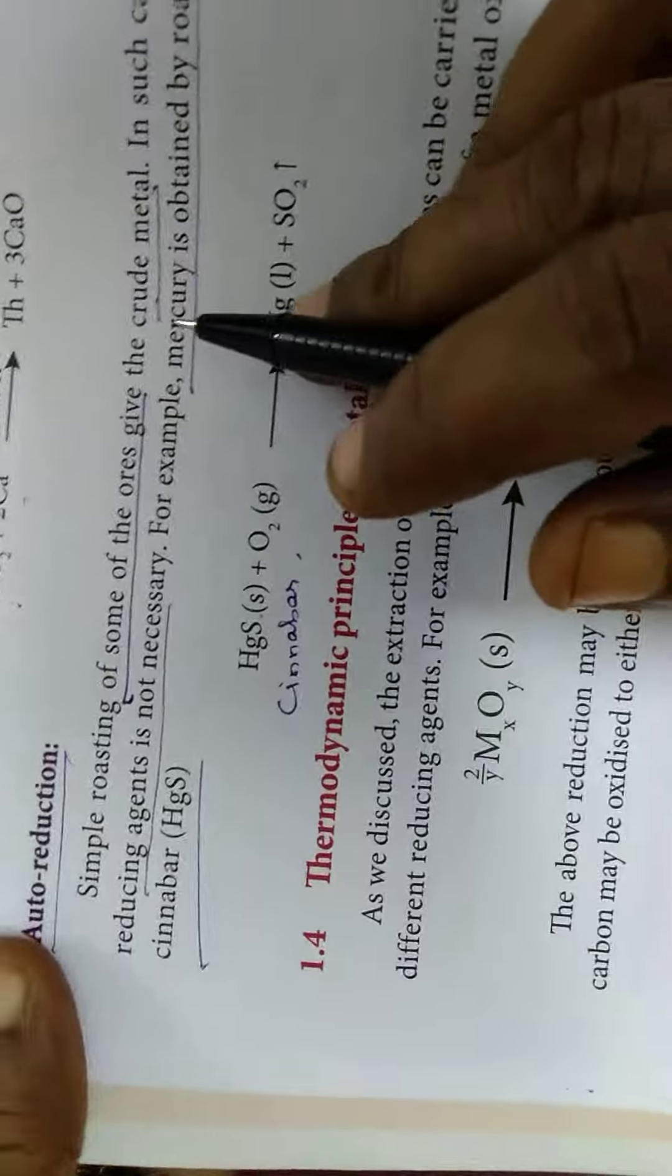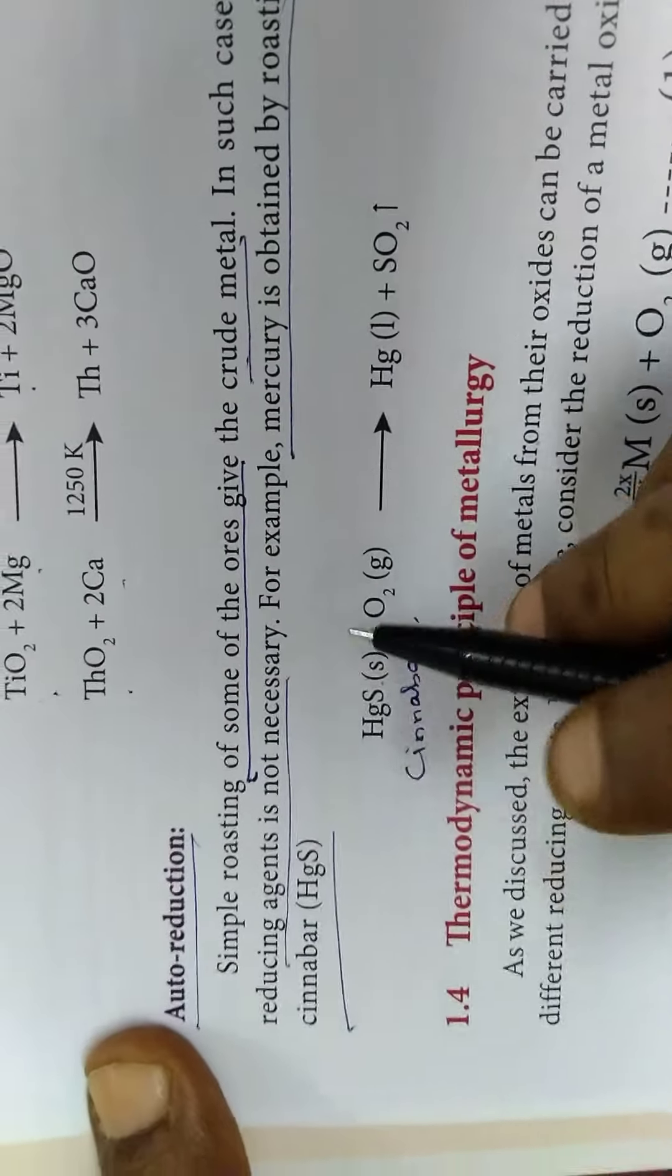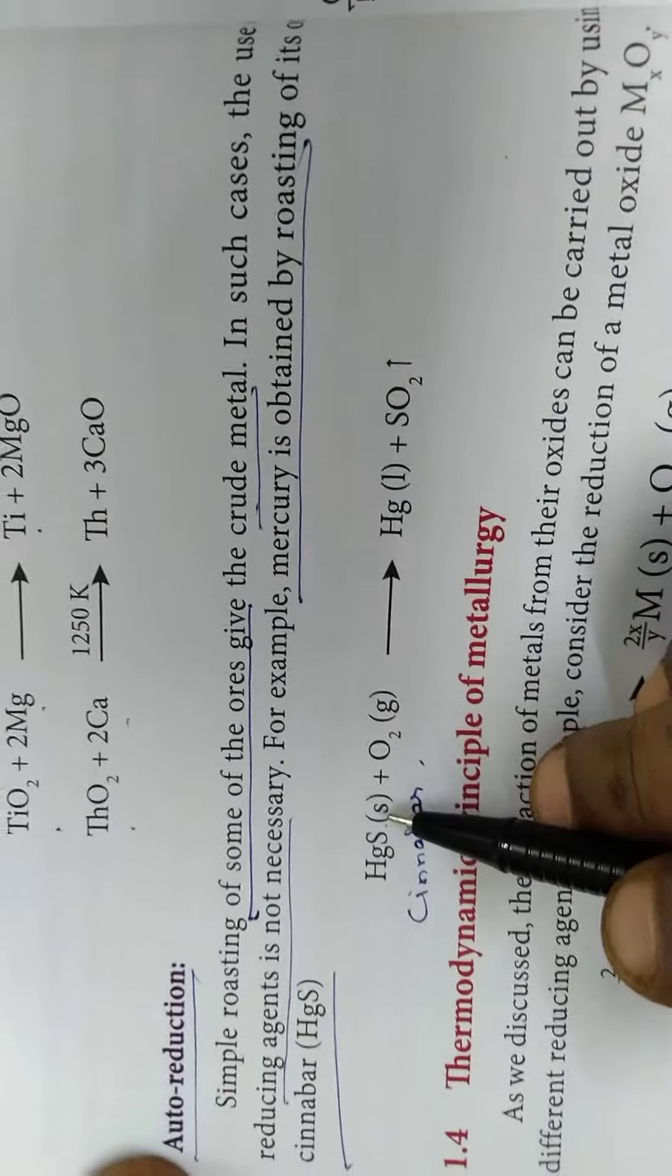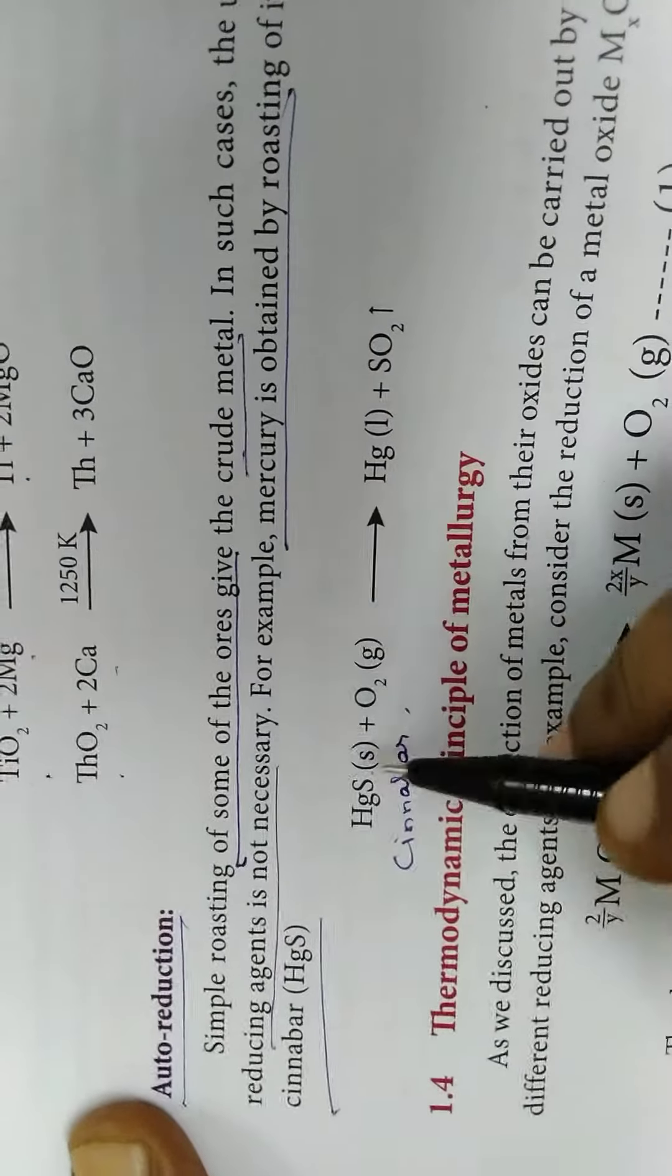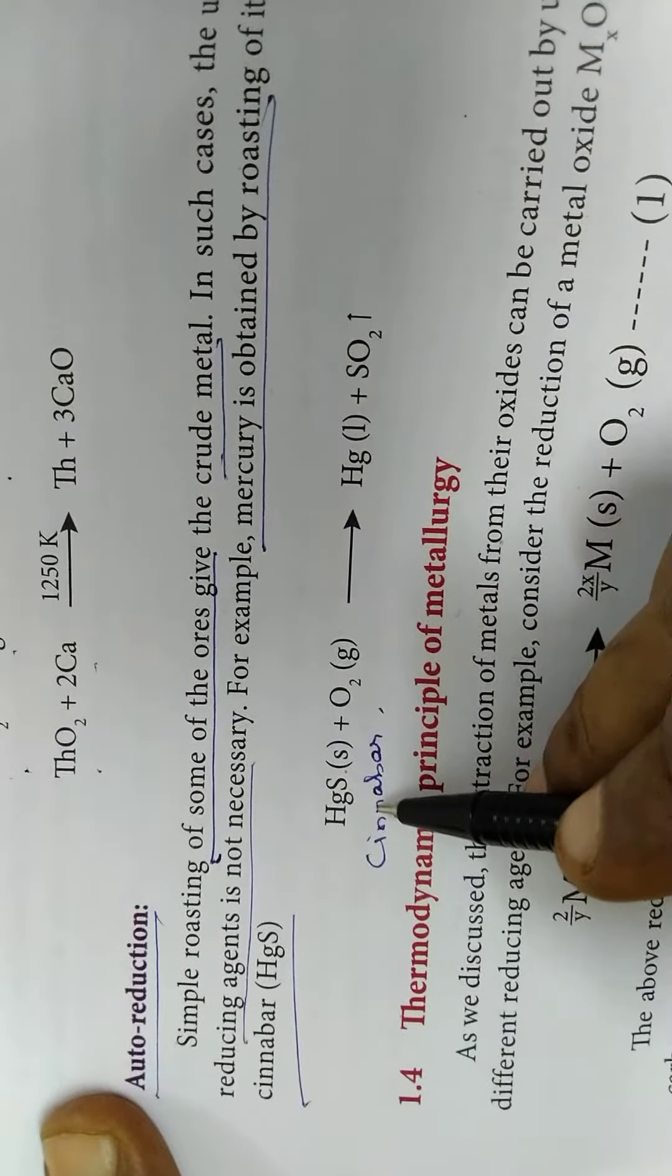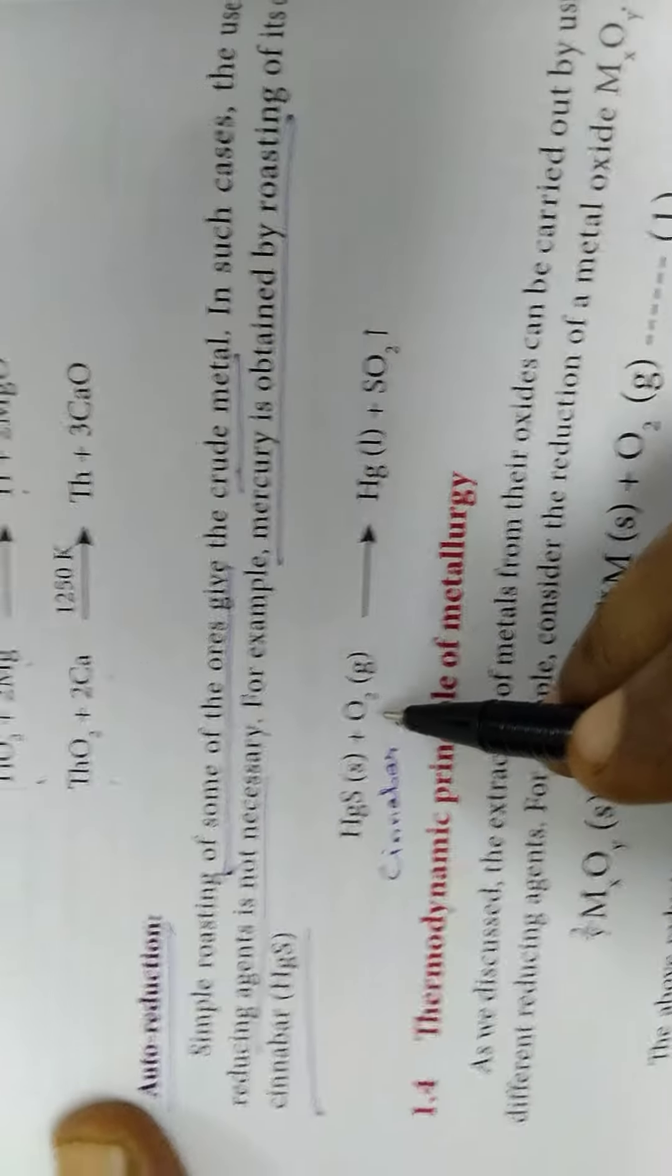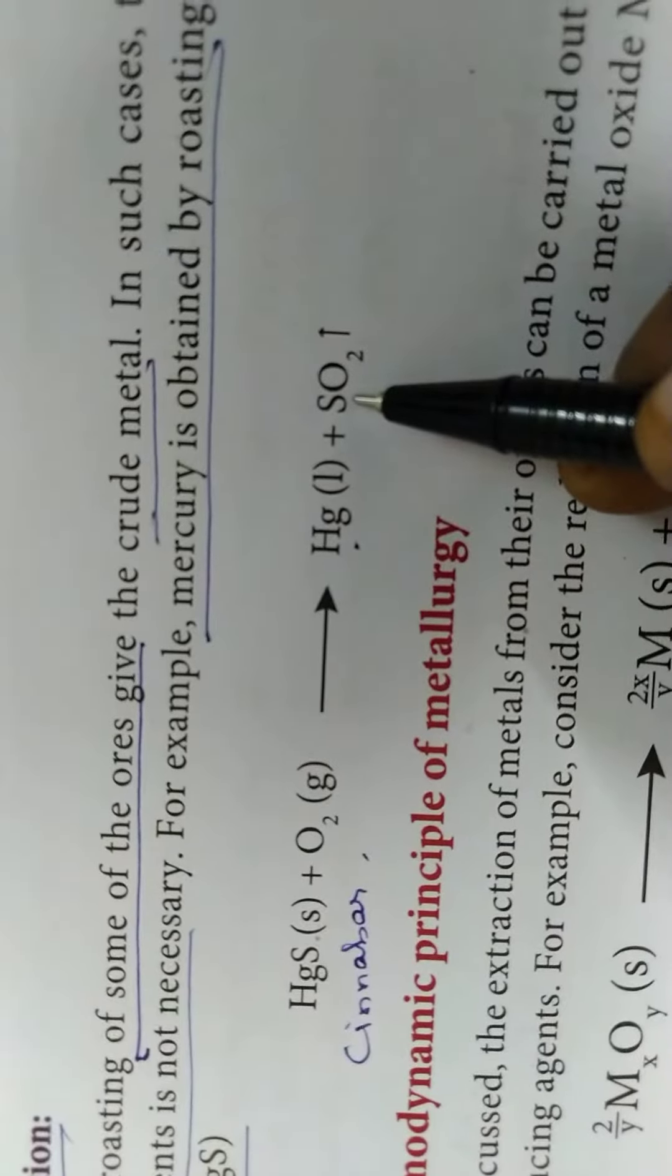And finally, Autoreduction. In the case of Autoreduction, no specific reducing agent is used to reduce the oxide or sulphide into its metallic form. For example, Cinnabar - its formula is HgS - when it is treated with oxygen, it is reduced into mercury and sulphur dioxide.